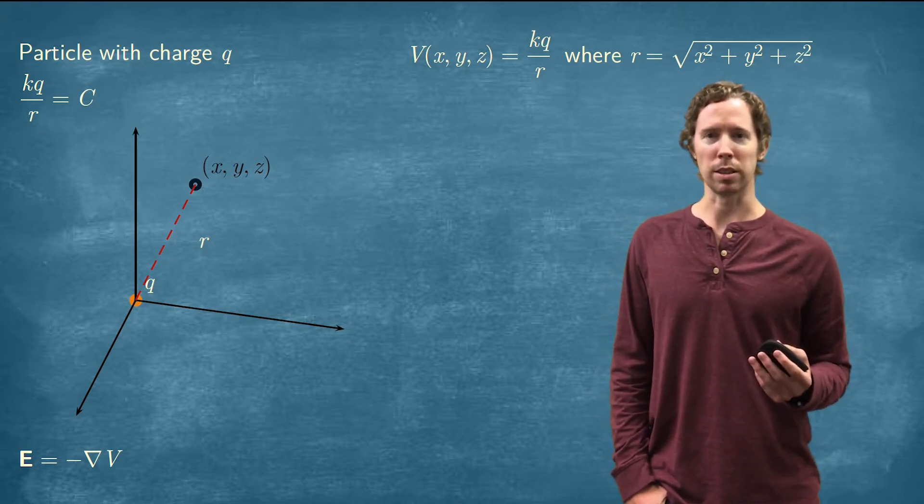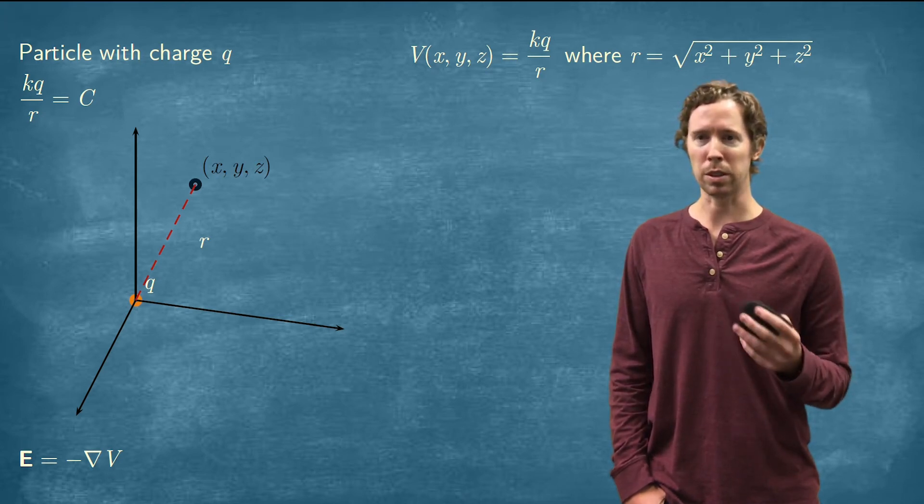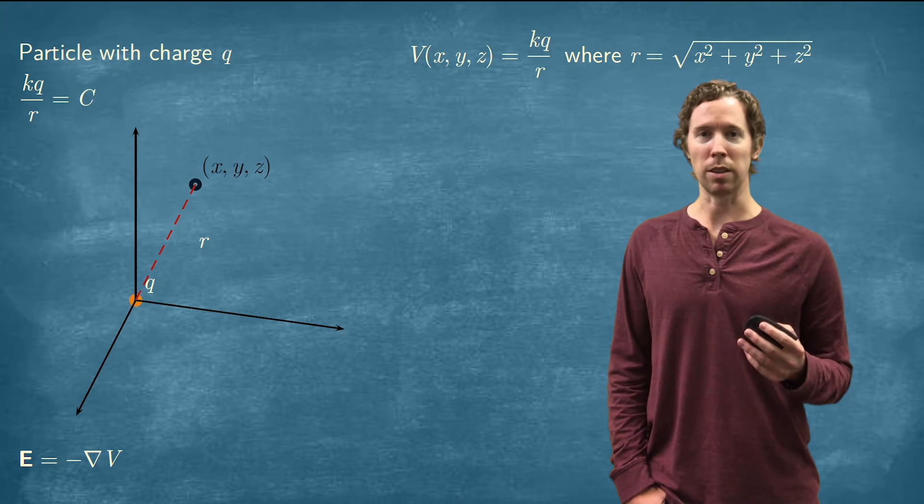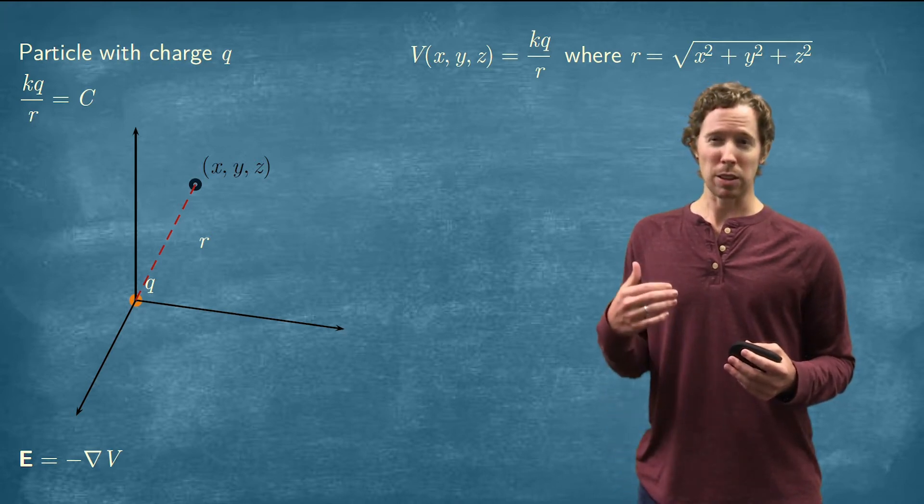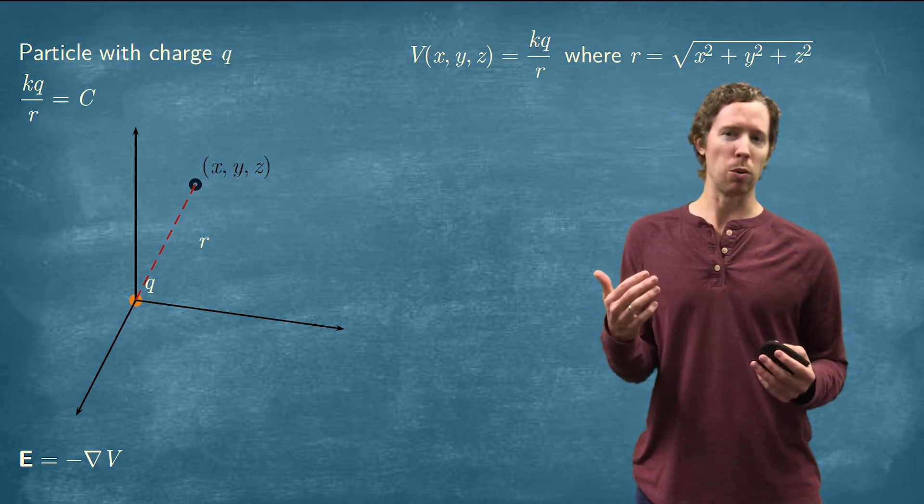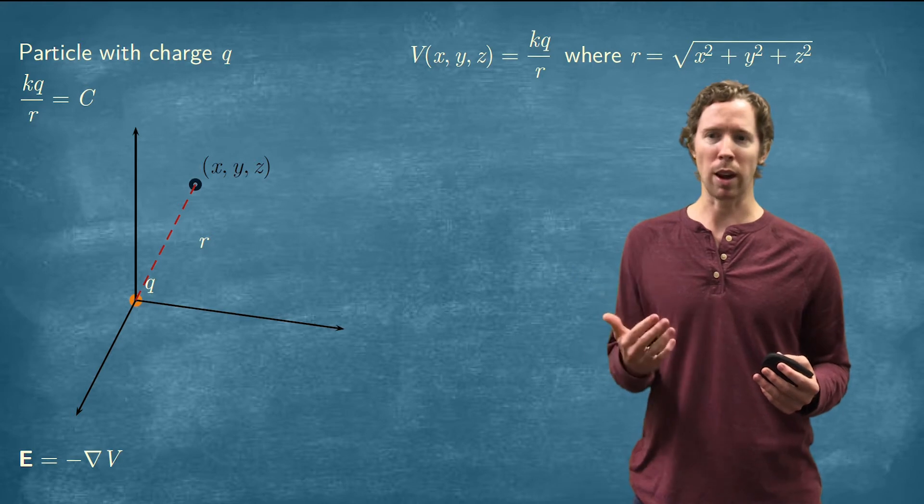That's interesting because we know that the gradient of this potential function is going to give vectors that are normal to the surface. So we want to think about that, but also we can think about this more easily without even writing down an equation.